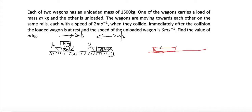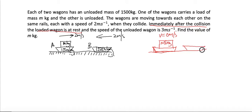After the collision, the loaded wagon is at rest — so v equals zero meters per second. The unloaded wagon is traveling at three meters per second.